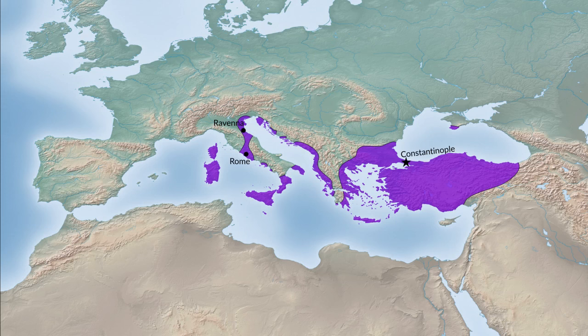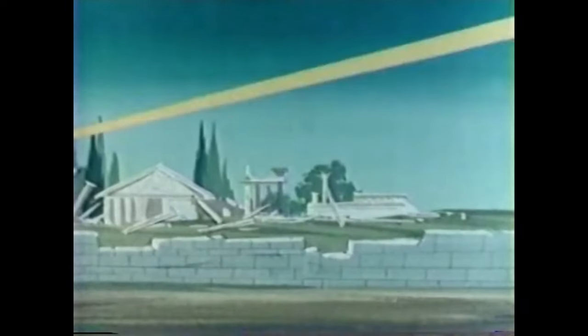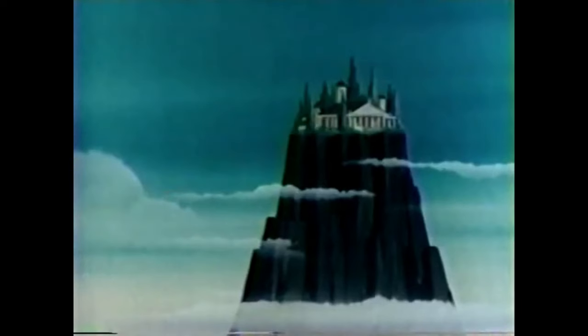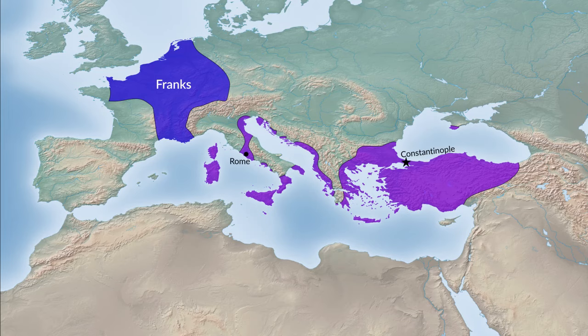There were two big pockets of Lombard power — one in the south centered around Benevento, and one up north. In the 700s, the Roman Empire based in Constantinople was weakening and was no longer able to provide protection against the Lombards. So the Pope in Rome appealed to the King of the Franks — a Germanic kingdom up in what is now northern France — and asked them to come down and provide protection for the Romans in Italy. And so he did that.